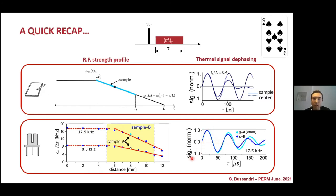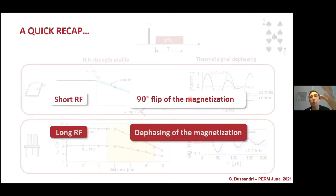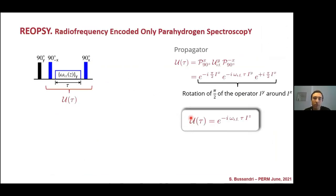What we saw, what we can confirm from these experiments and from the calculation is that monitoring and controlling the length of the sample, in short RF we can make a 90 degree flip of the magnetization and long RF produce a defacing of the magnetization. This great control of the spin evolution during RF allows us to design the following sequence.